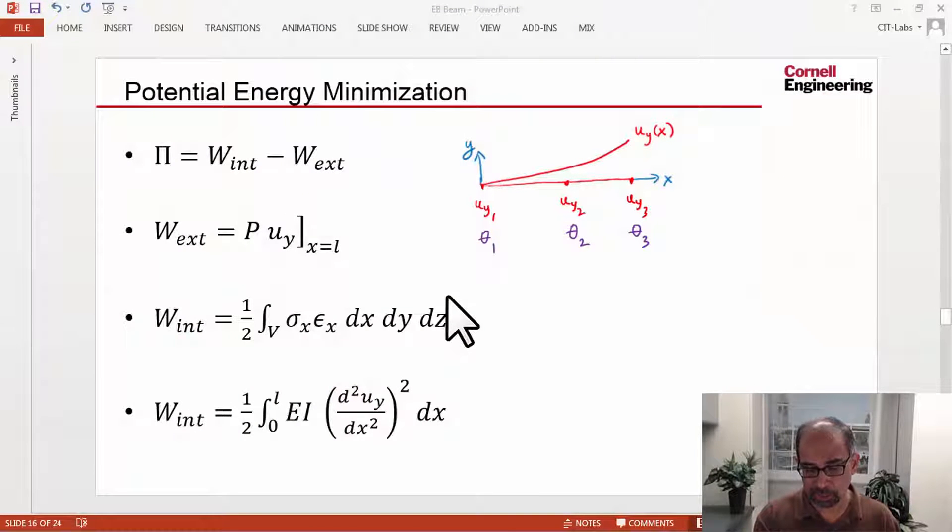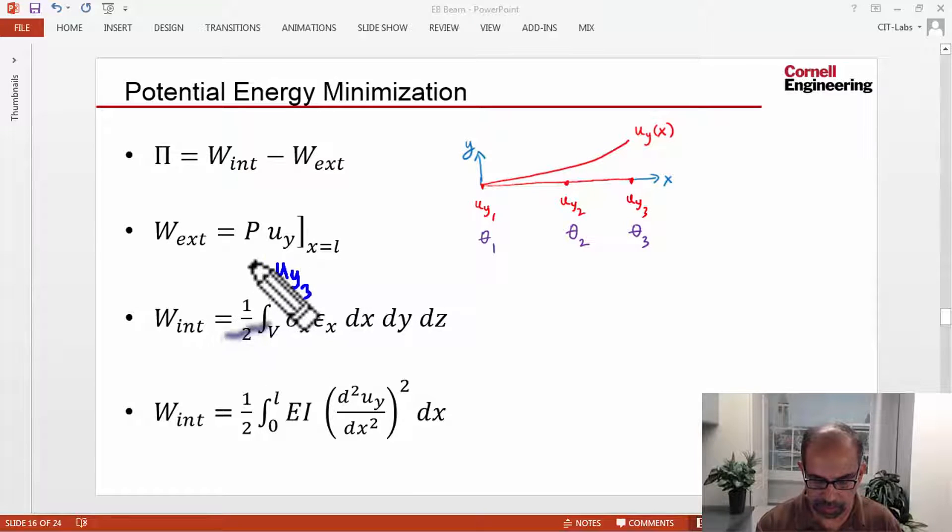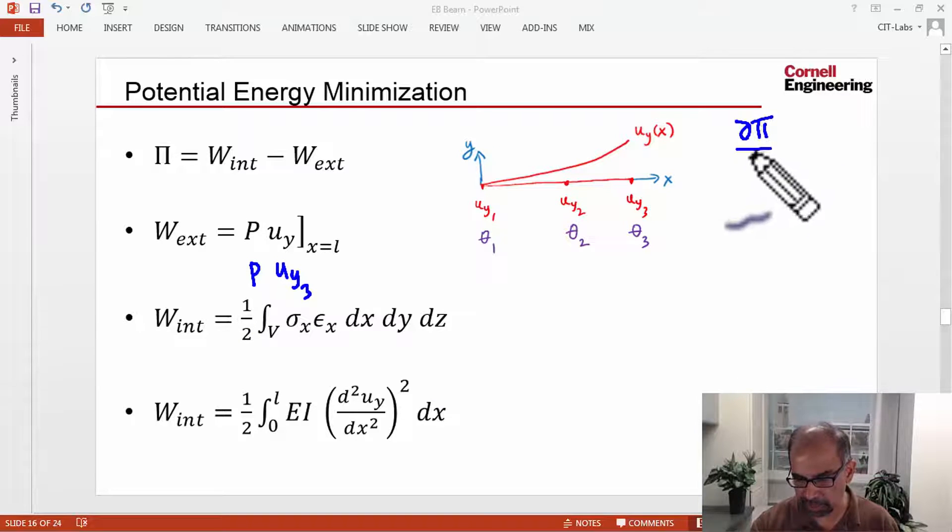If I go back to this slide on potential energy minimization, the work due to external forces is given by this term, and this is nothing but P*UY3. Then you derive the algebraic equation from minimizing the potential energy with respect to UY3.